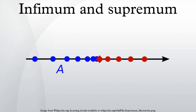Formal definition. A lower bound of a subset S of a partially ordered set P is an element A of P such that A ≤ x for all x in S. A lower bound A of S is called an infimum of S if, for all lower bounds Y of S in P, Y ≤ A. Similarly, an upper bound of a subset S of a partially ordered set P is an element B of P such that B ≥ x for all x in S. An upper bound B of S is called a supremum of S if, for all upper bounds Z of S in P, Z ≥ B.